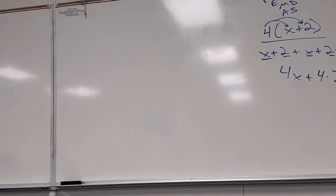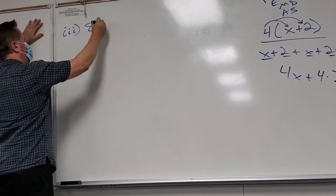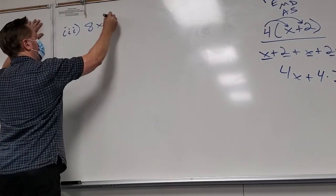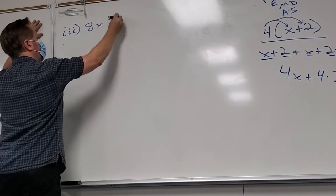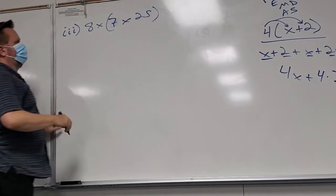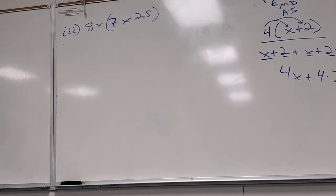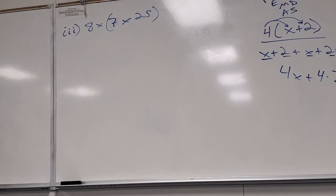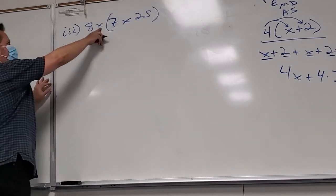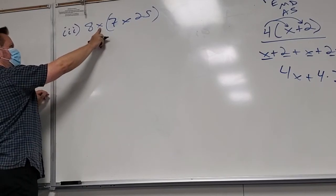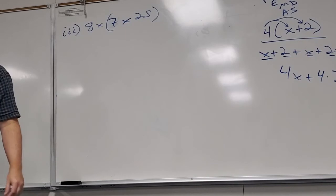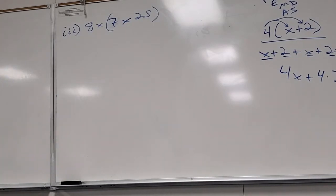Another example: eight times seven times twenty-five. We're still using × for multiplication — get used to it. Notice: since it's all multiplication, it's associative and commutative, so you can multiply in any order you want.